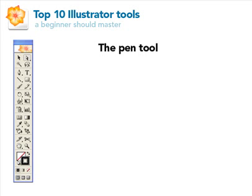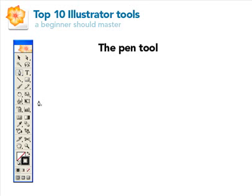Welcome to part 3 of the top 10 Illustrator tools a beginner should master. In our last tutorial I showed you the direct selection tool and its different functions. Now we're going to focus on the pen tool. The pen tool is a really important tool to master, and for some it's a little confusing at first. Photoshop has the pen tool as well and it's important to learn in both. The formal definition is that it creates paths or anchor points, which are lines, and creates bezier handles to control the lines.